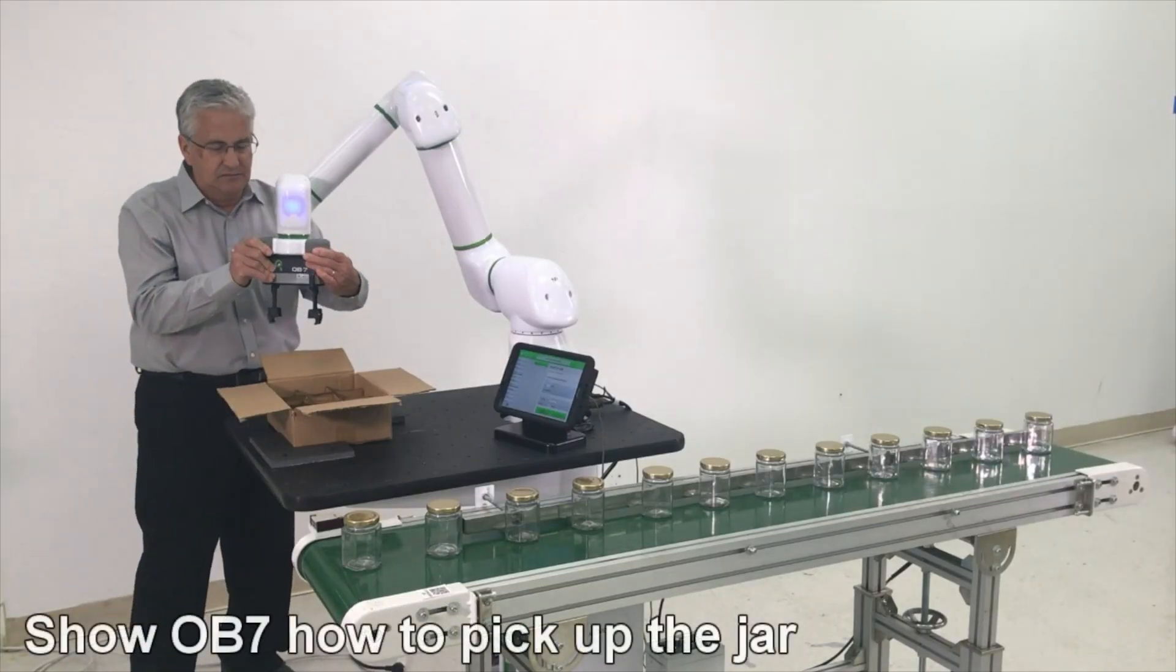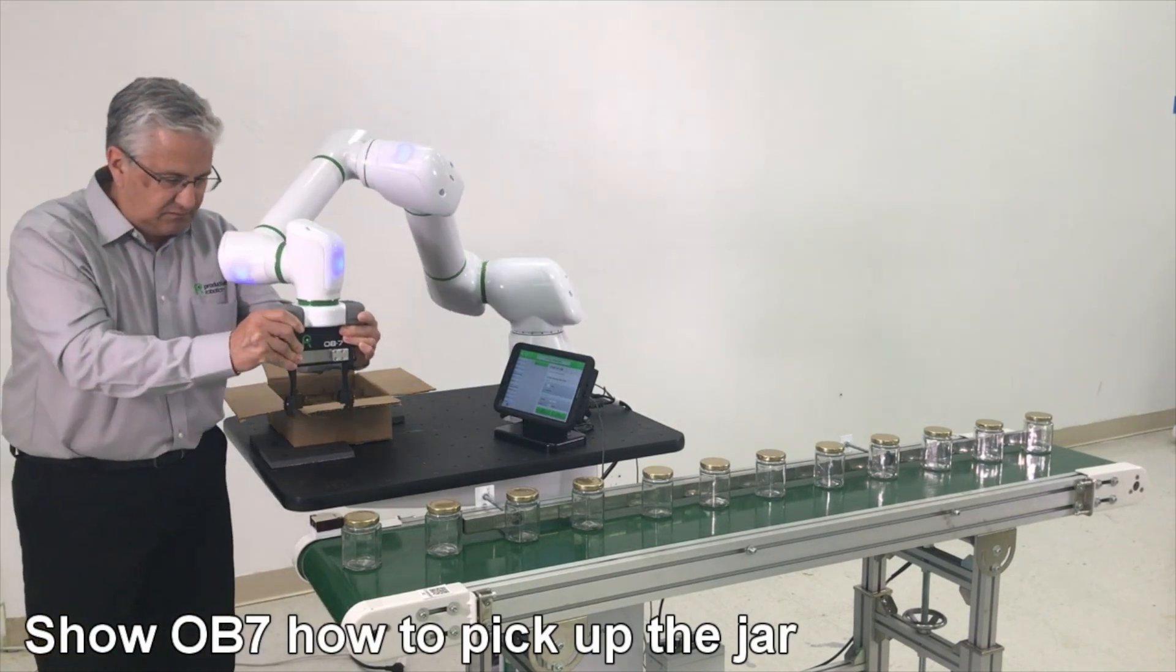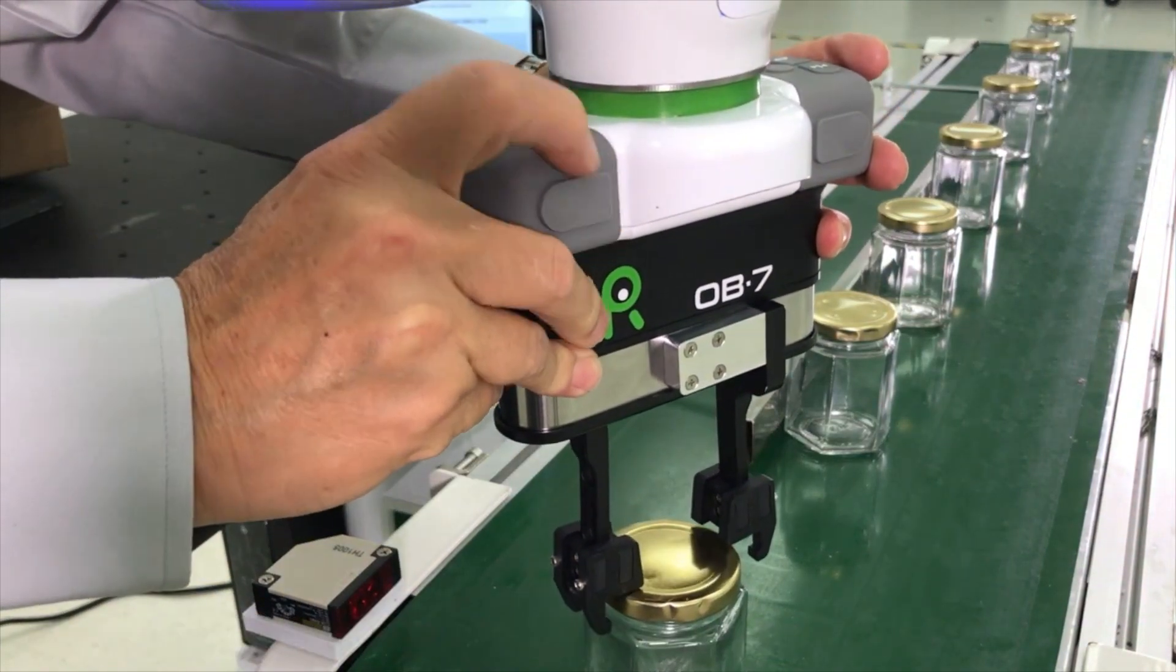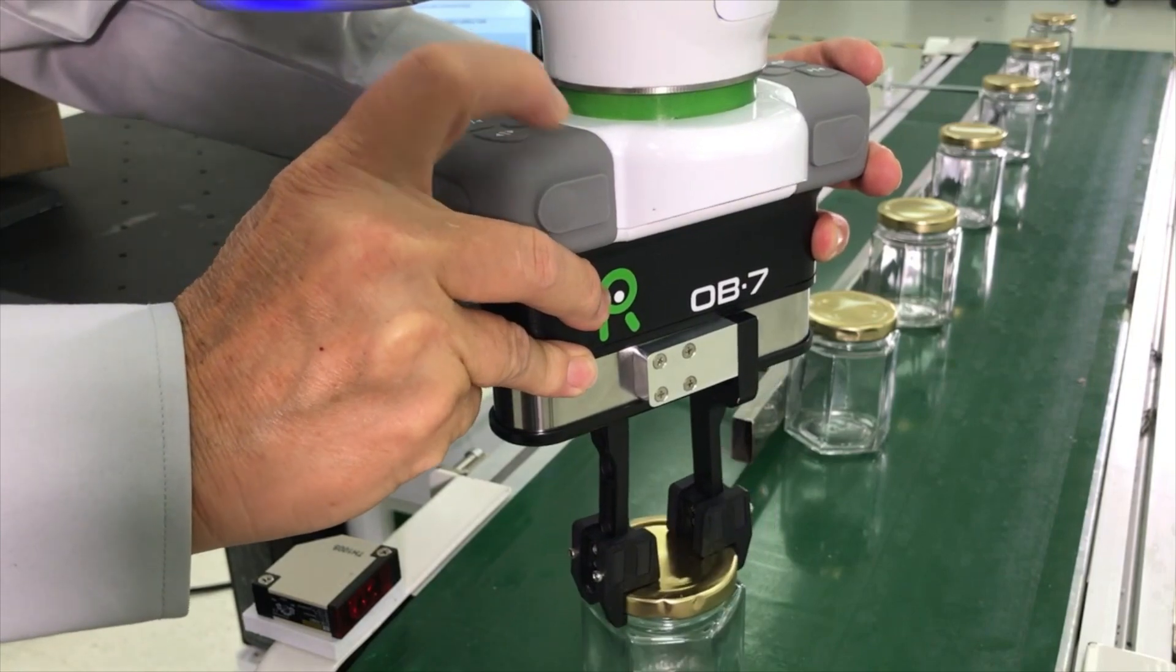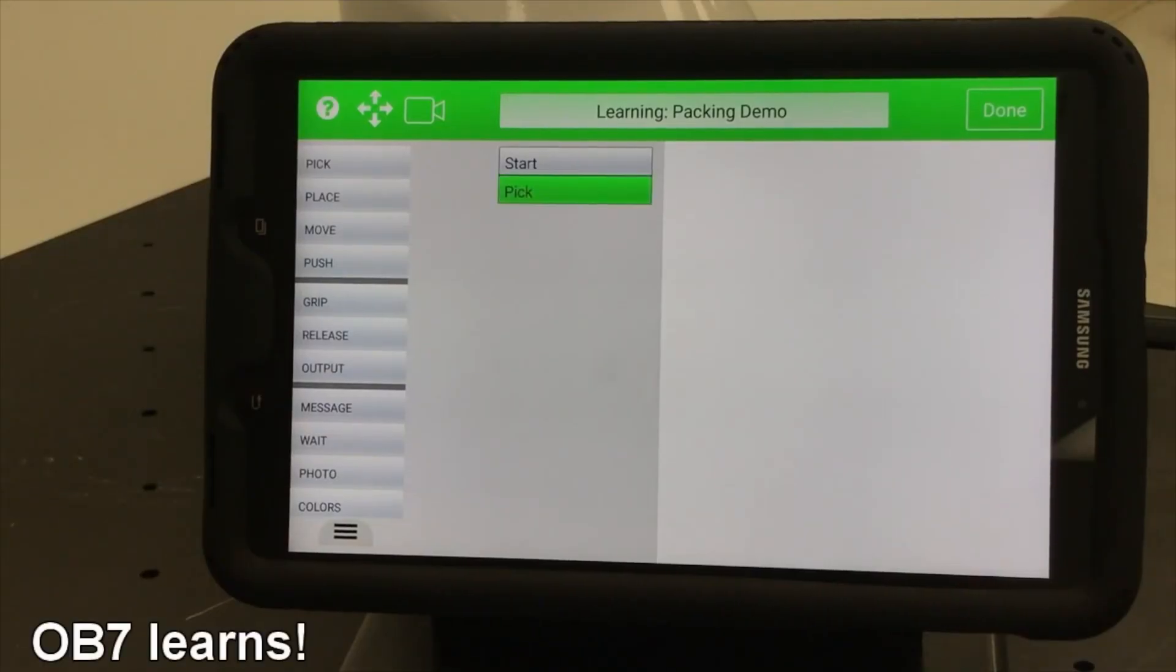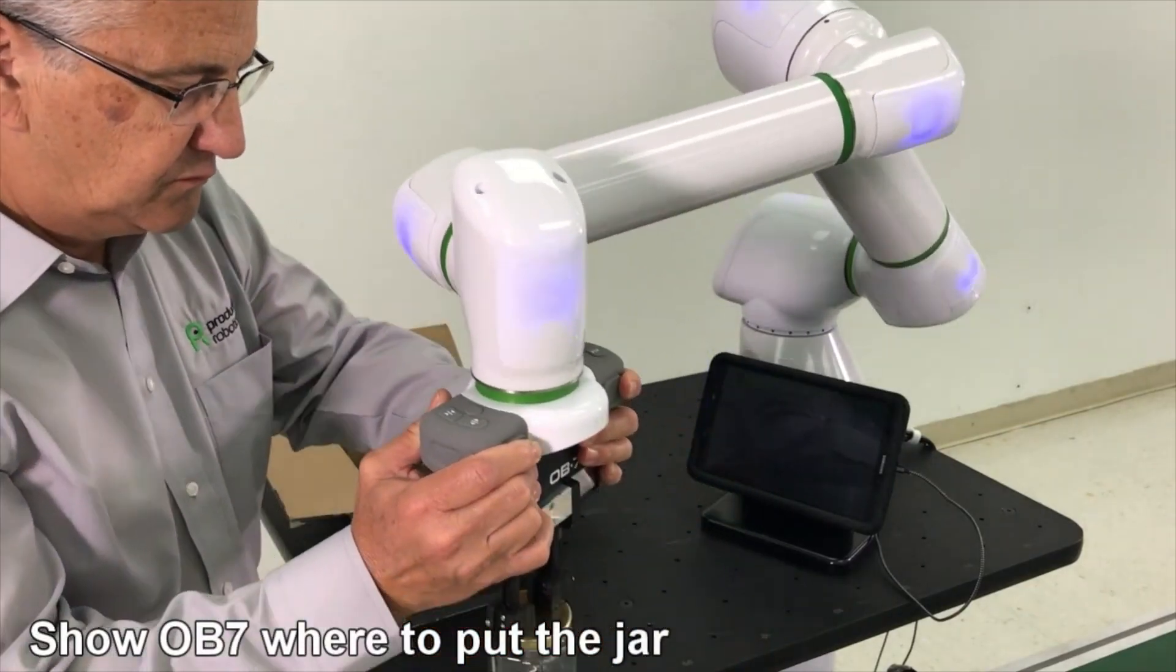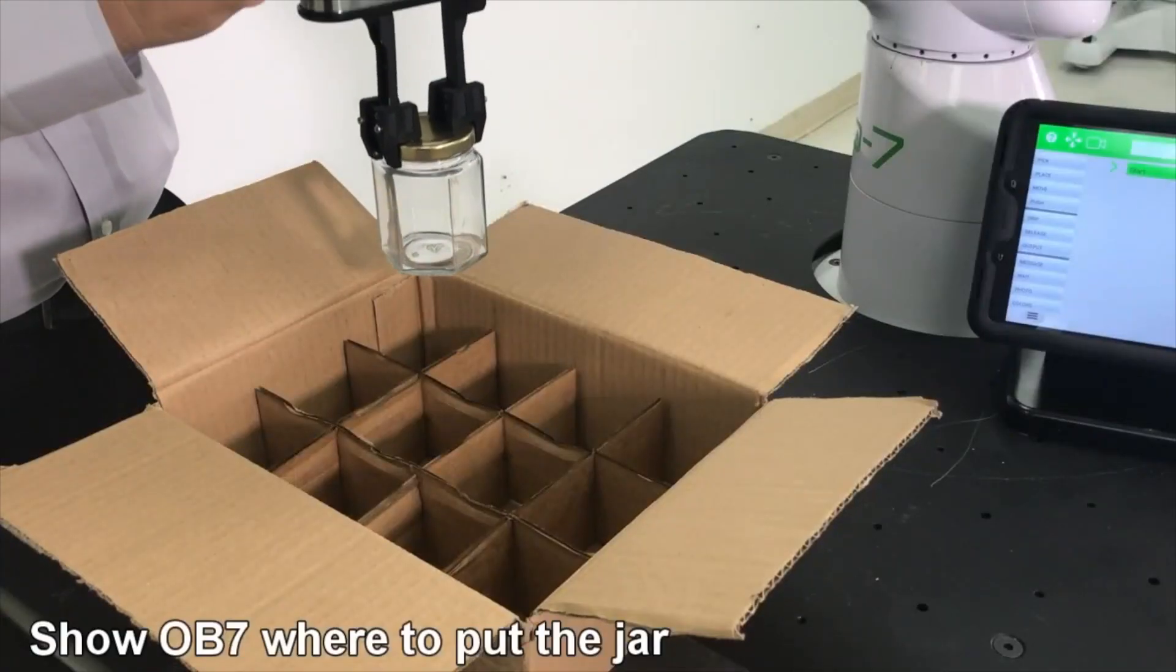Guide OB7 over the jar. Then press the button to close the gripper. Pick position, learn. OB7 instantly learns how to pick up the jar and automatically records this task.